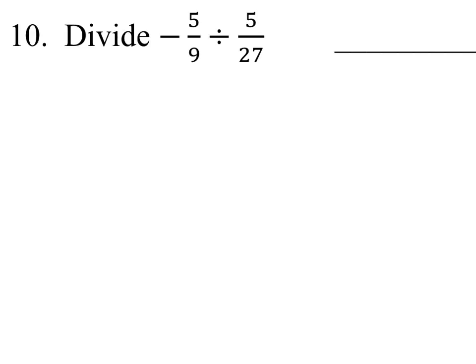But remember we don't really divide fractions, we just multiply them. Our first number on the left stays the same, but we change this to multiplication, which means we also reciprocate the numbers. So I have 27 over 5.